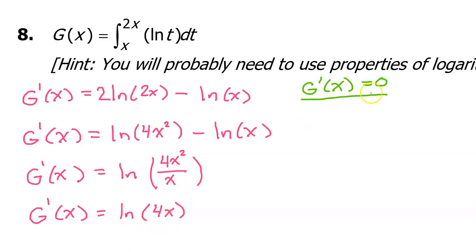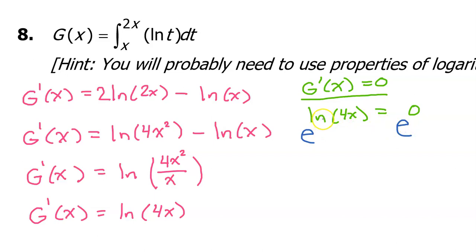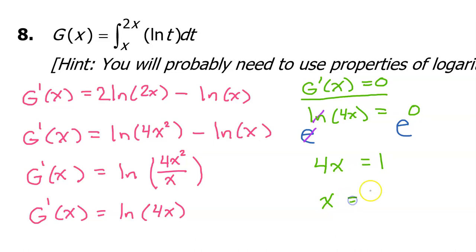In order to find the location of a horizontal tangent line, we set the derivative equal to zero: natural log of 4x equals zero. To solve this, we exponentiate both sides — dropping a base e on both sides. Base e and natural log are inverse functions, so they cancel, leaving 4x on the left. A constant raised to the zero power is 1, so we have 4x equals 1. Dividing both sides by 4, we get x equals one-fourth. This is the location of the horizontal tangent line.